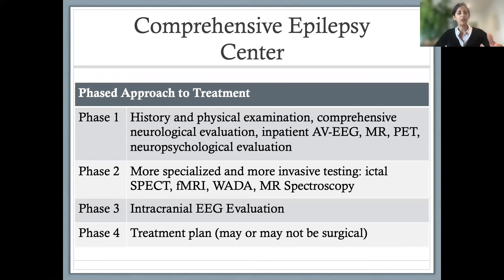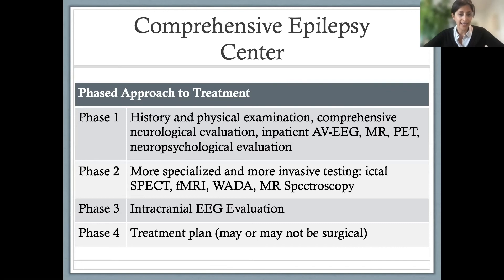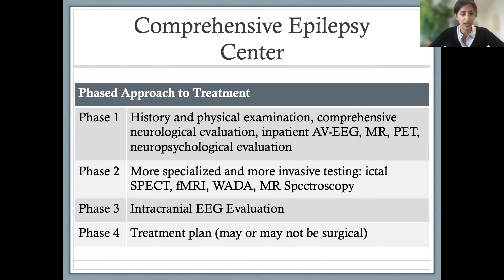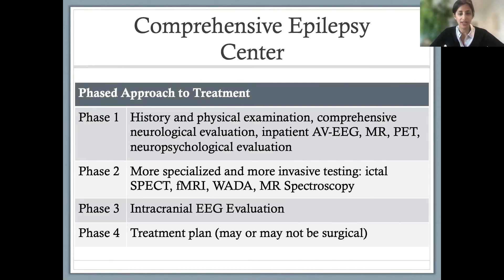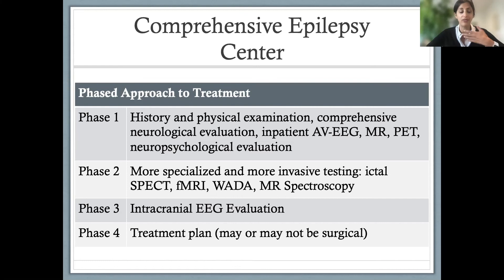Phase two — which I actually like to call phase 1.5 — is more specialized and more invasive testing done only if necessary. This includes ictal SPECT, functional MRI to lateralize language dominance, a WADA test, MR spectroscopy, and MEG (magnetoencephalogram) — all used as additional measures to understand where seizures are coming from. Phase three, also known as phase two, is intracranial EEG evaluation, and phase four is the treatment plan, which may or may not be surgical — it's important to recognize we might not find a good surgical option.